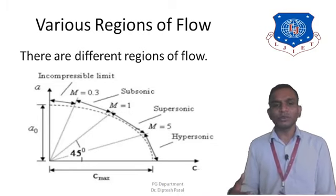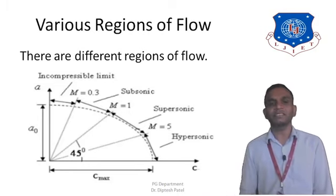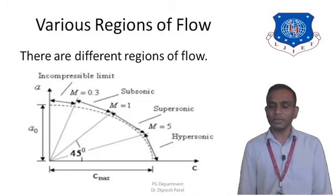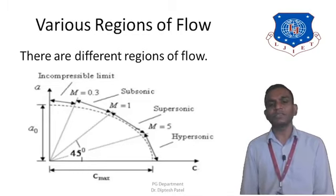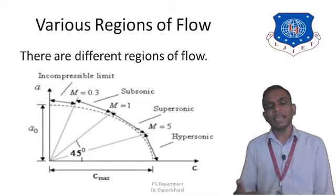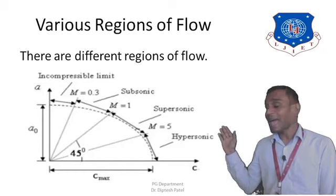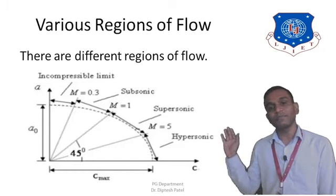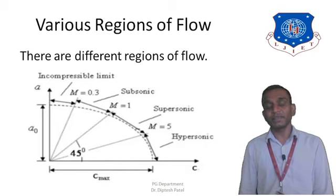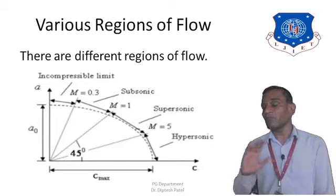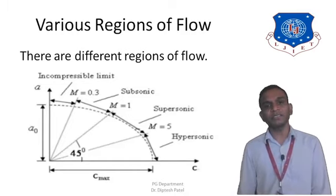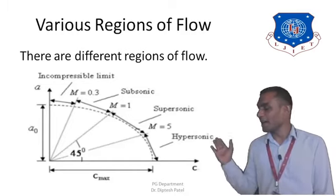One more flow region that needs to be discussed, which is not shown in the previous diagram, is the transonic flow region. In the transonic flow region the Mach number lies between 0.88 and 1.2. Basically the transonic flow region overlaps with both the subsonic and supersonic flow regions. So the transonic flow region is the sixth region of flow, and overall we have covered six different regions of flow.